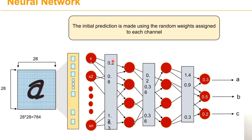These are the random weights assigned during the training process. The predicted values we are getting are 0.3, 0.5, and 0.2. Here we are giving A as the input, but the maximum probability is for B — so there is an error. We have to minimize this error with the help of the gradient descent algorithm using the backpropagation rule.